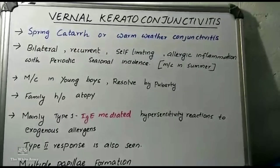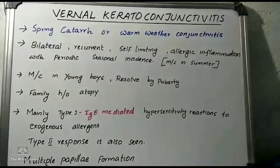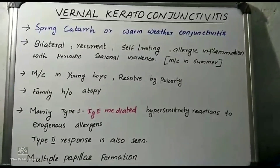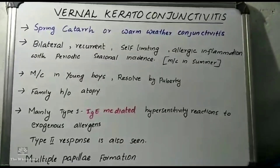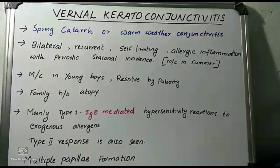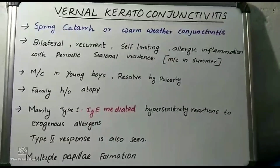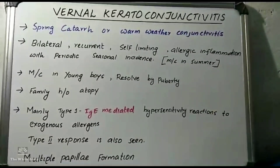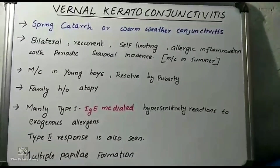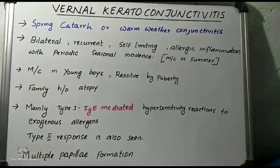Next, we will discuss vernal keratoconjunctivitis. It is also known as spring catarrh. It is a type of allergic conjunctivitis in which there is inflammation of the conjunctiva due to allergy or hypersensitivity reaction. This may be either an immediate or delayed type of hypersensitivity.